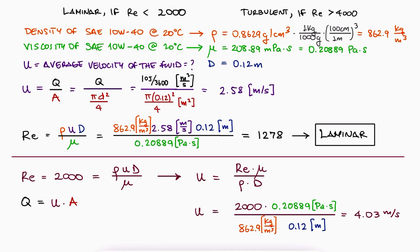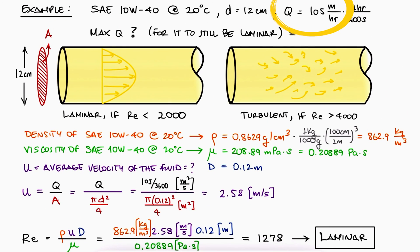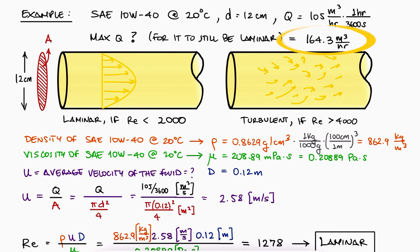Since the area hasn't changed, Q is 0.0456 m³/s or 164.3 m³/hr. This means the current flow rate of 105 m³/hr can be increased to 164.3 m³/hr, and the flow would still be laminar.